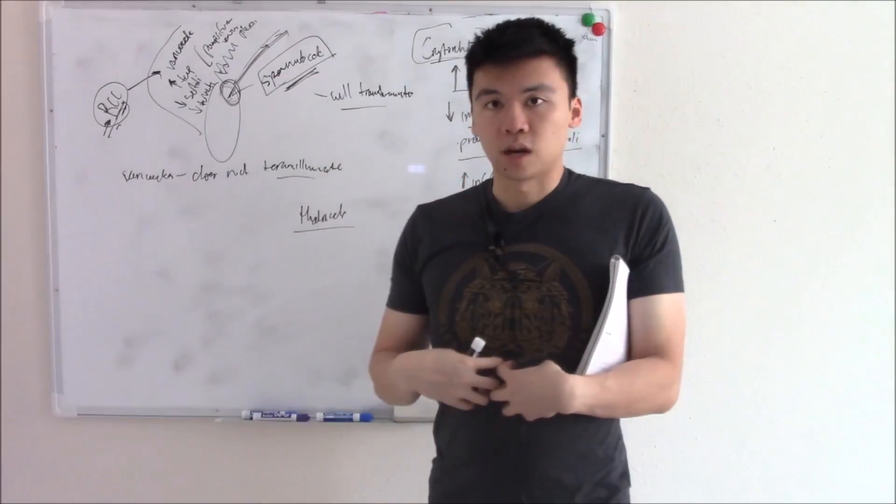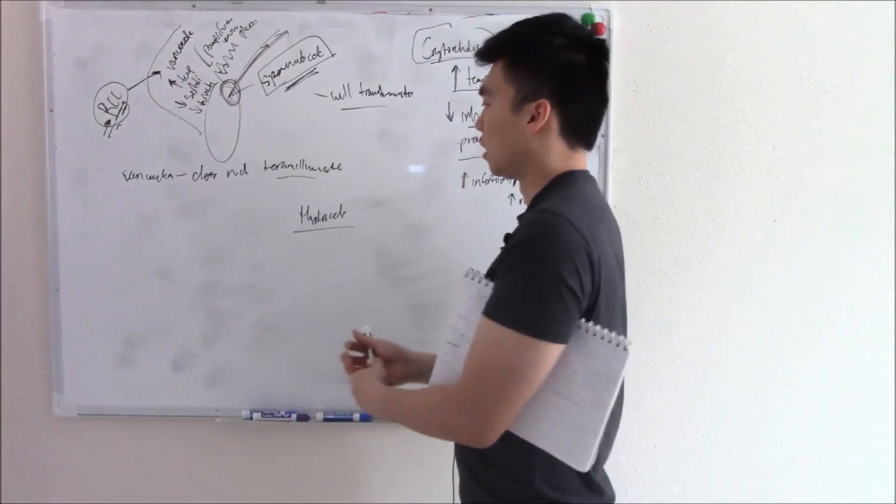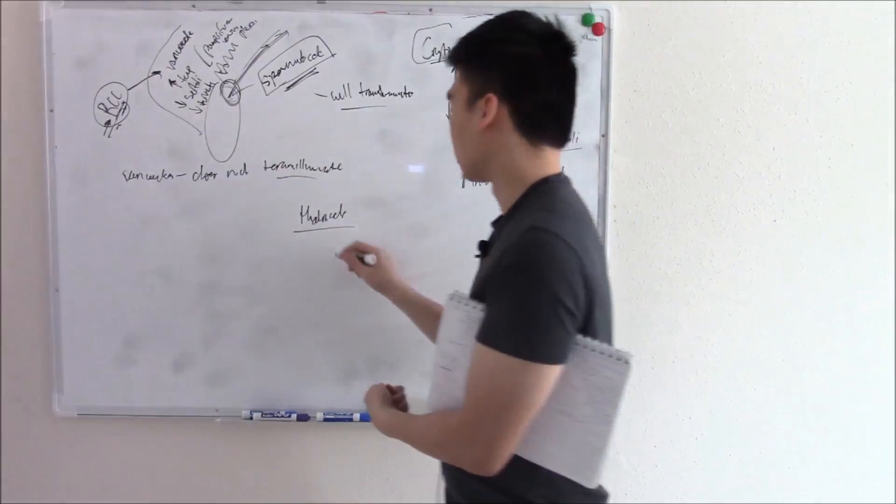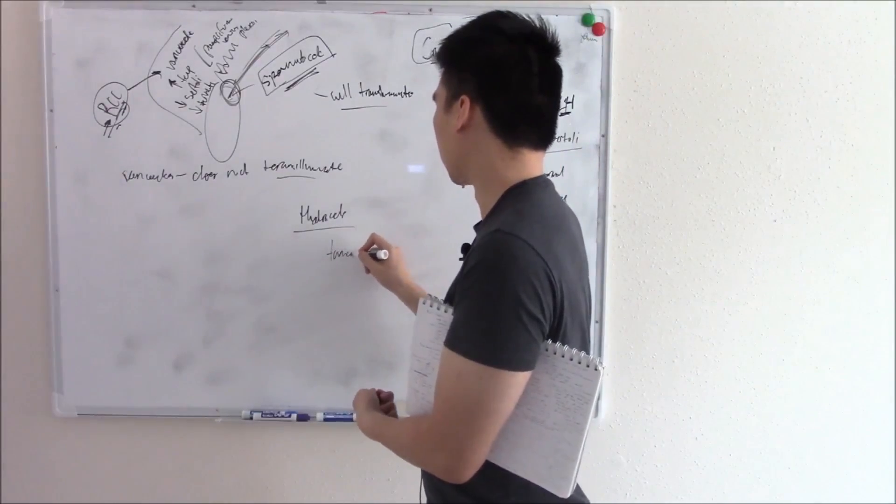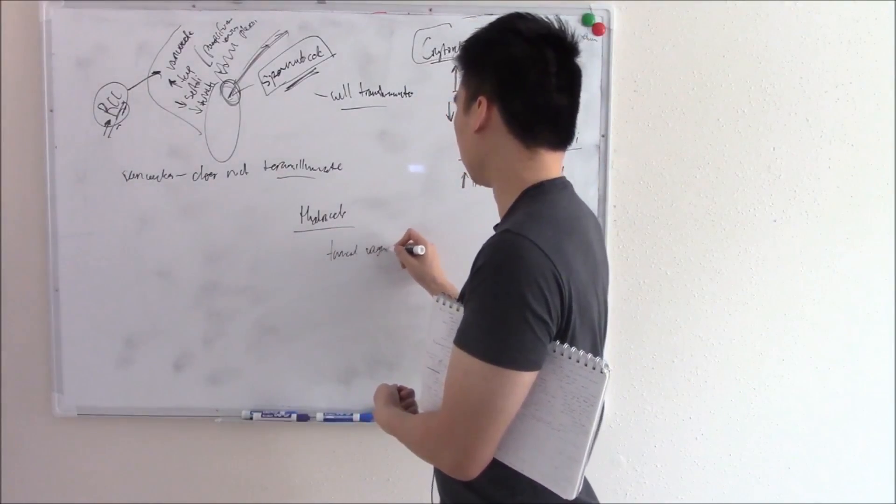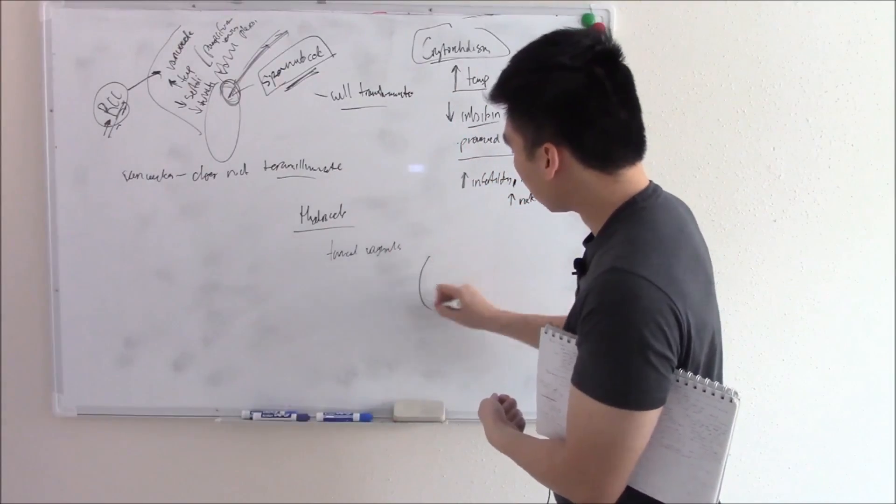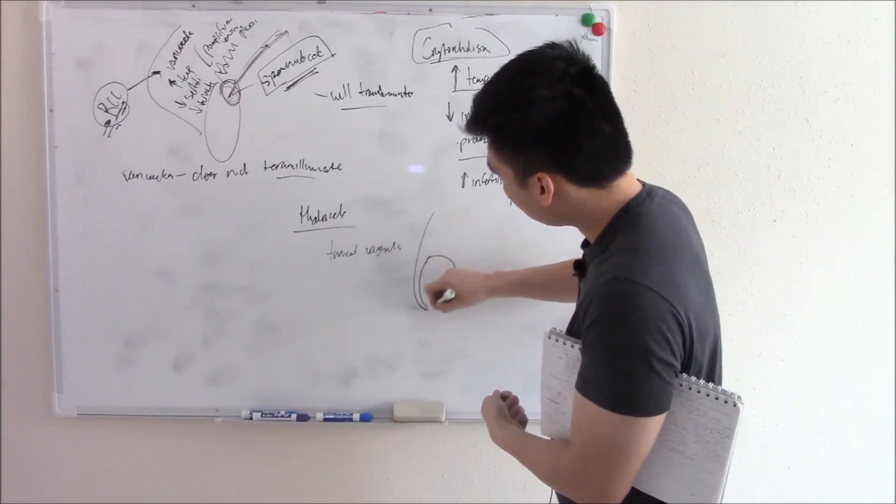So when you start in your abdomen and it starts to descend, it pulls this membrane from the peritoneum with it, called the tunica vaginalis. So it pulls this membrane with it, so this is your testes, and this is the membrane that covers it.